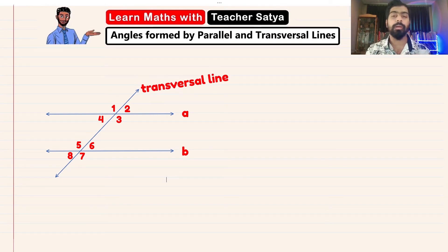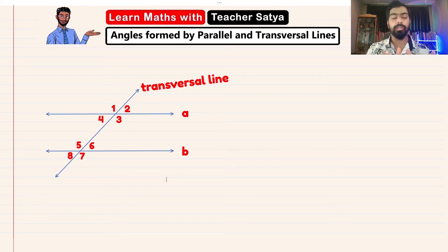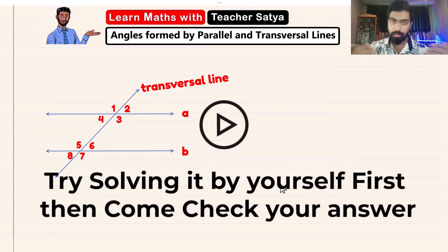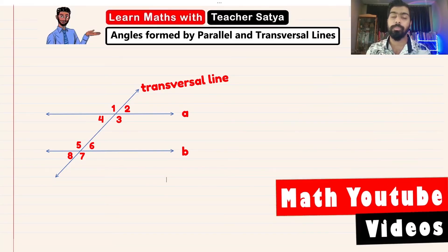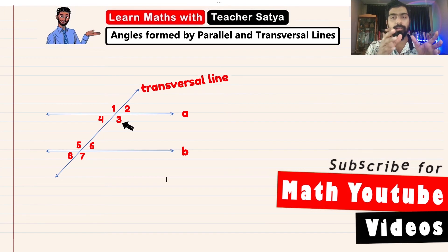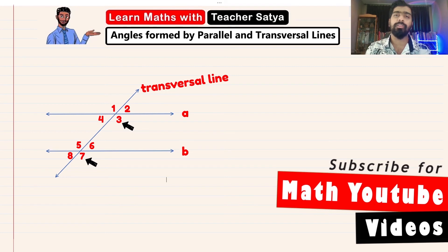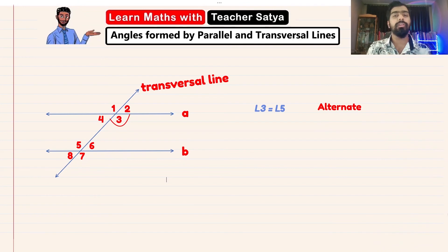Now we'll talk about alternate interior angles. Click pause and try to find the alternate angles for angle 3 and angle 4 by yourself, then come back and see if you got it correctly. For angle 3, step 1: find the corresponding angle — the corresponding angle of angle 3 is angle 7. Then the vertically opposite angle to angle 7 is angle 5. So angle 3 is the alternate interior angle of angle 5.